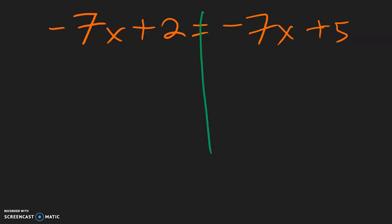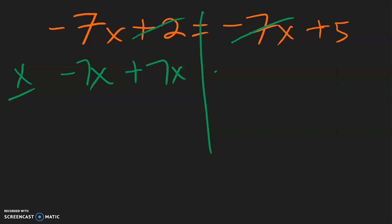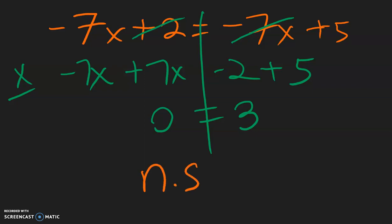We solve it like normal. You want to get all of the variables on the left side, so this negative 7x can stay over here. But this negative 7x needs to come over here, becomes a positive 7x. Getting all the constants on the right side, this positive 2 moves over, becomes negative 2. And this positive 5 stays over here. So negative 7 plus 7 is 0 — we don't have any more x's. And negative 2 plus 5 is 3. So we have the statement 0 equals 3, which is not true, so our answer is no solution.